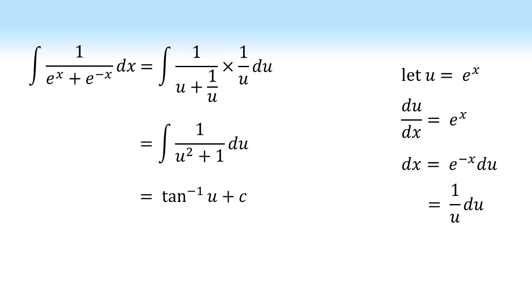So integrating this we get the inverse tan of u plus our constant c, because this is an indefinite integral. Substituting our e to the x back into u we get the final answer. It's the inverse tan of e to the x plus c.